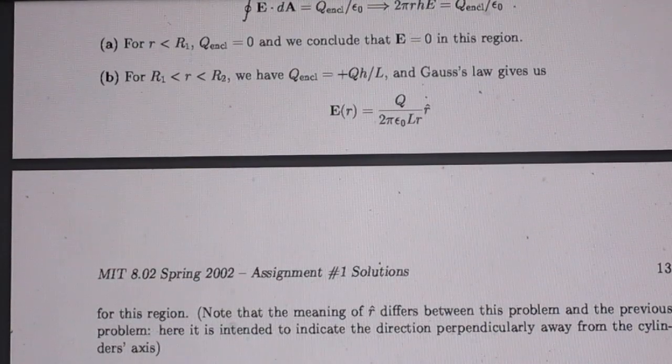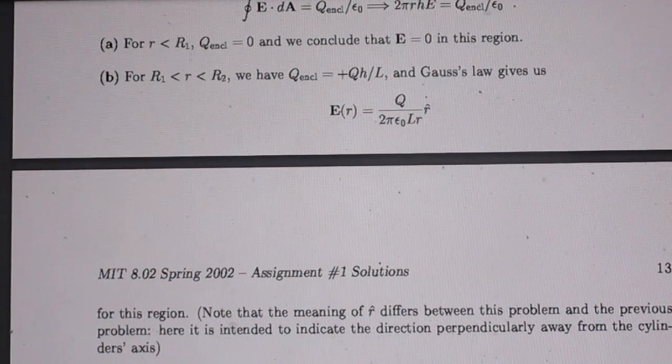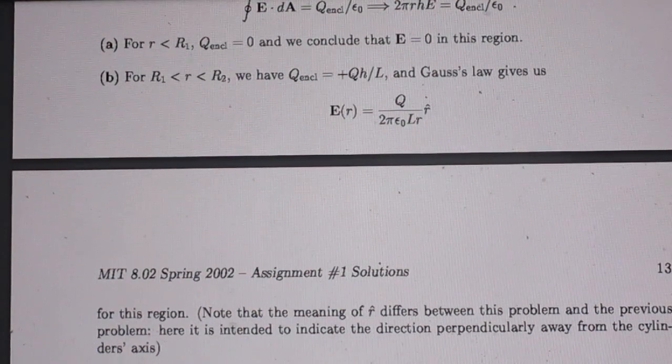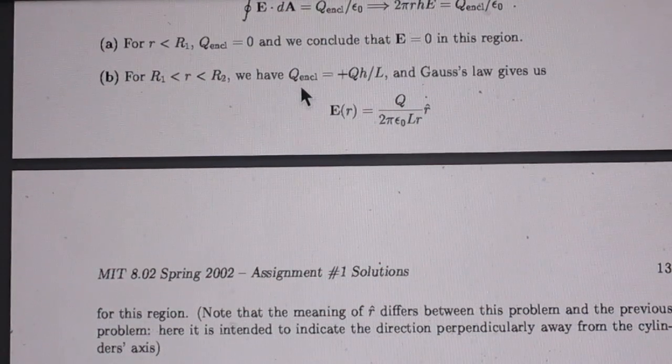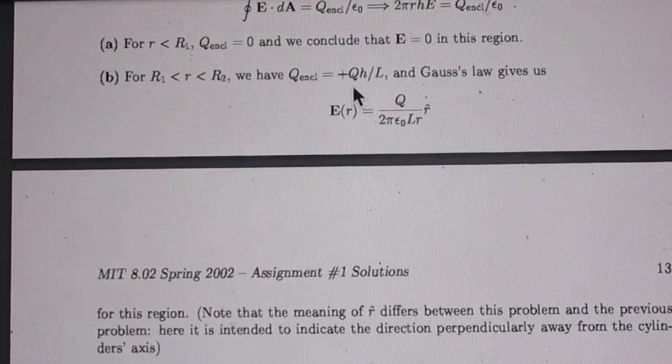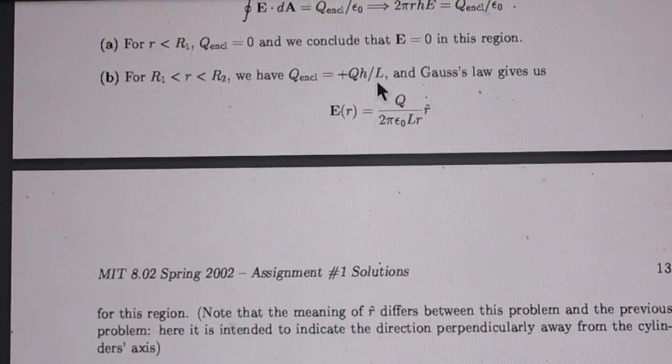Second question. We are now between the two. So now you have to apply Gauss's law again, but now the enclosed charge is now Q times h divided by L.